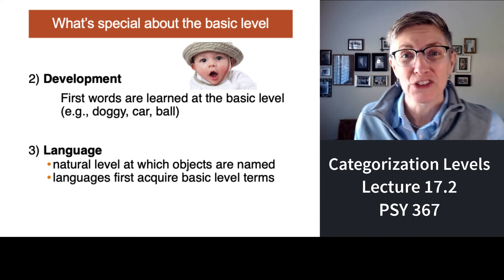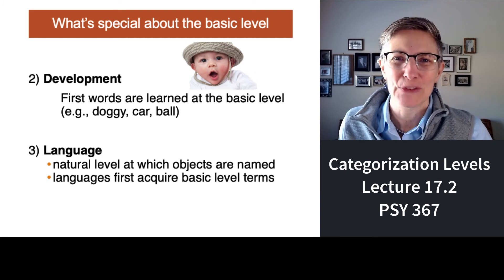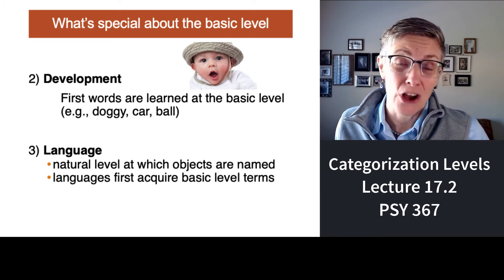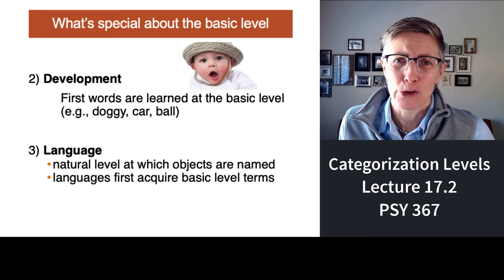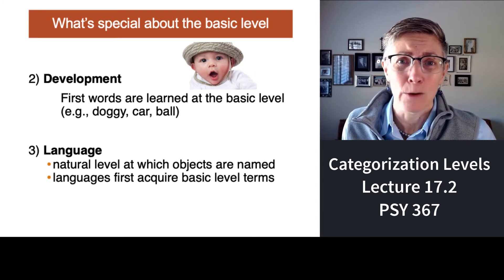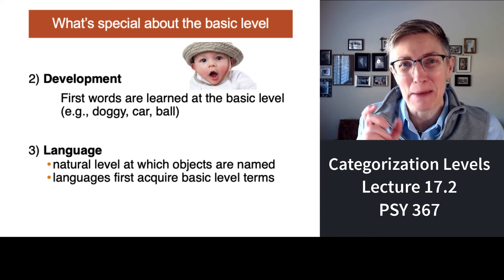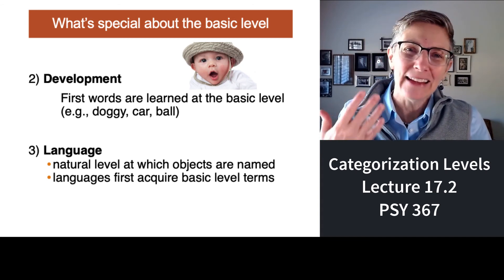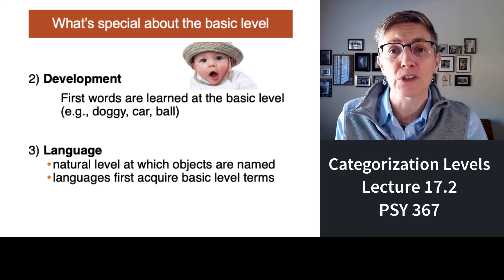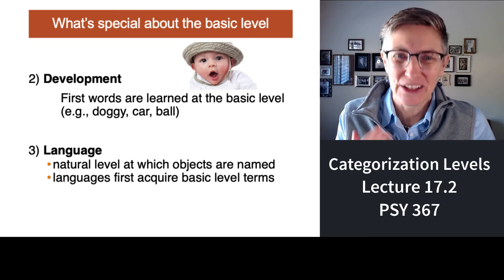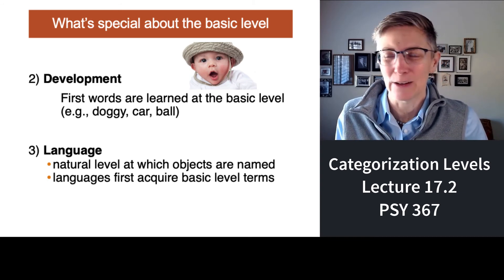When babies learn to talk, the first words they develop are basic level categories. Your child will learn 'dog' or 'doggy' and 'kitty' before they learn 'Doberman Pinscher,' 'German Shepherd,' or 'animal.' No baby has ever looked at a dog and said 'animal.' Babies use basic level categories. And in fact, when you are first learning a second or third language as an adult, the words you use first are also basic level categories. So we use them a lot in language — they're very important.